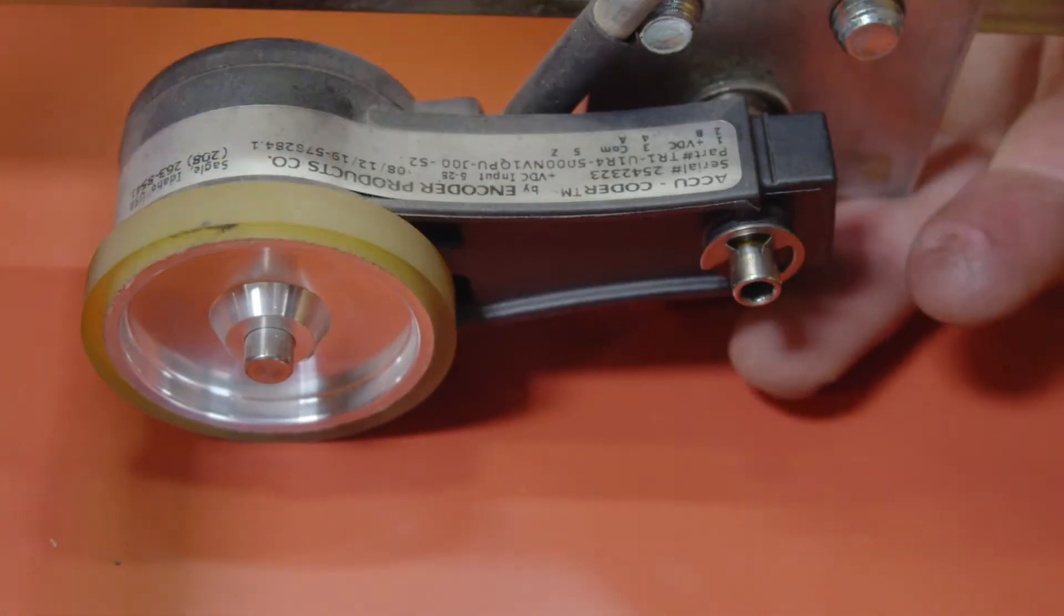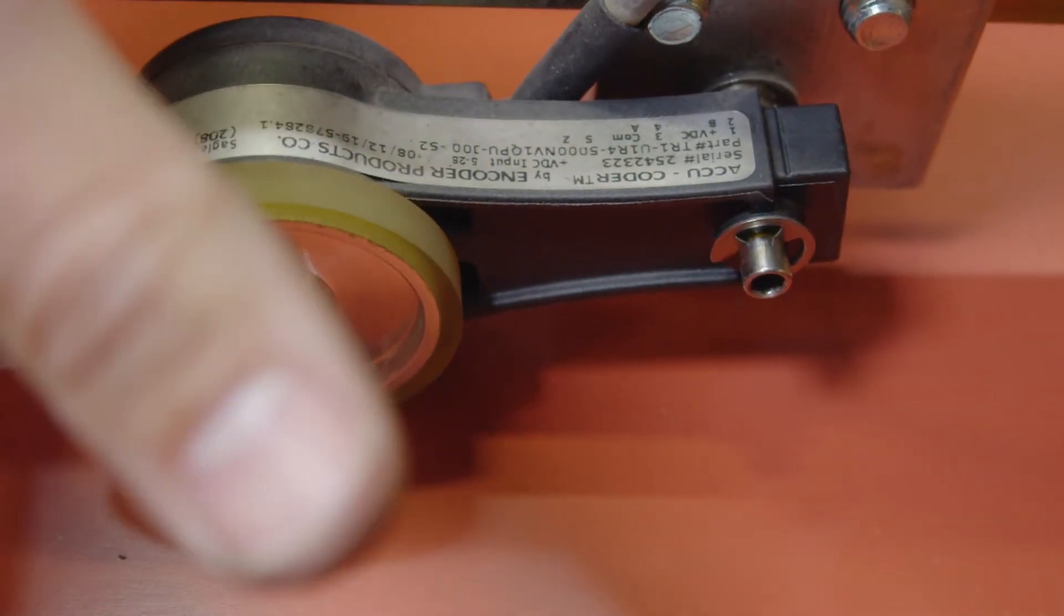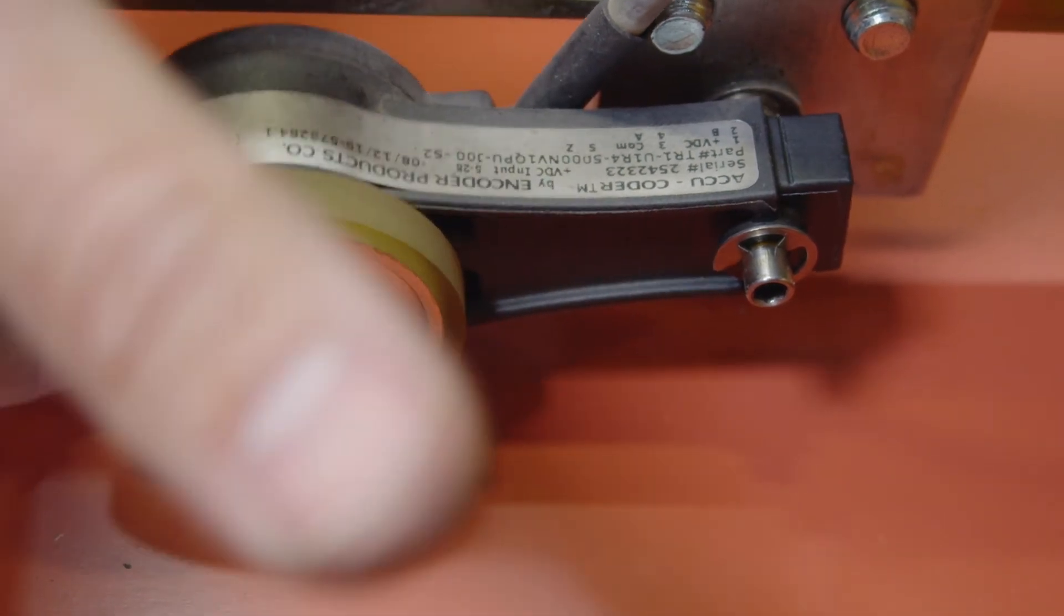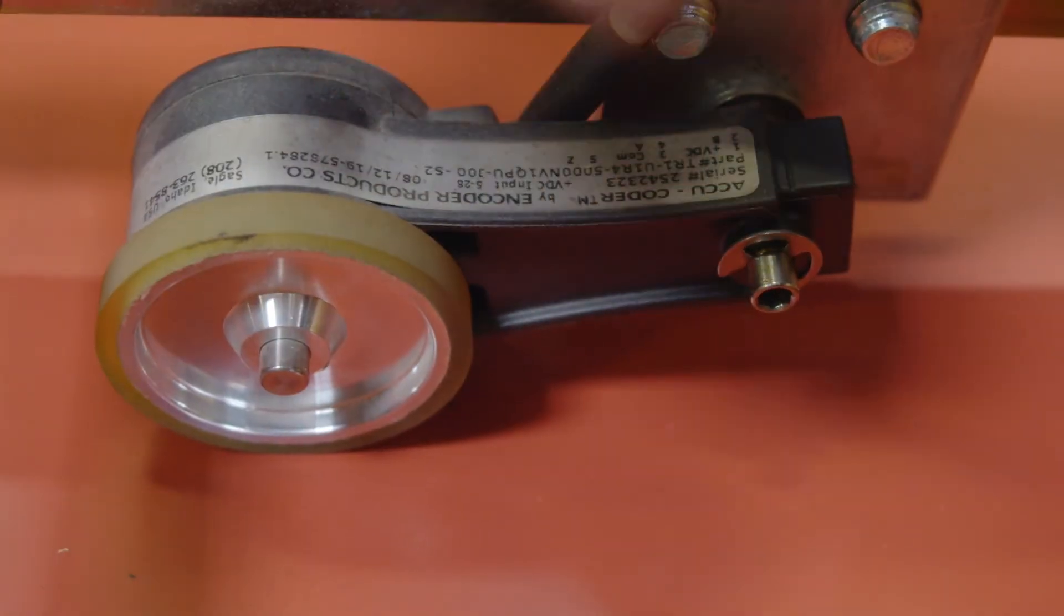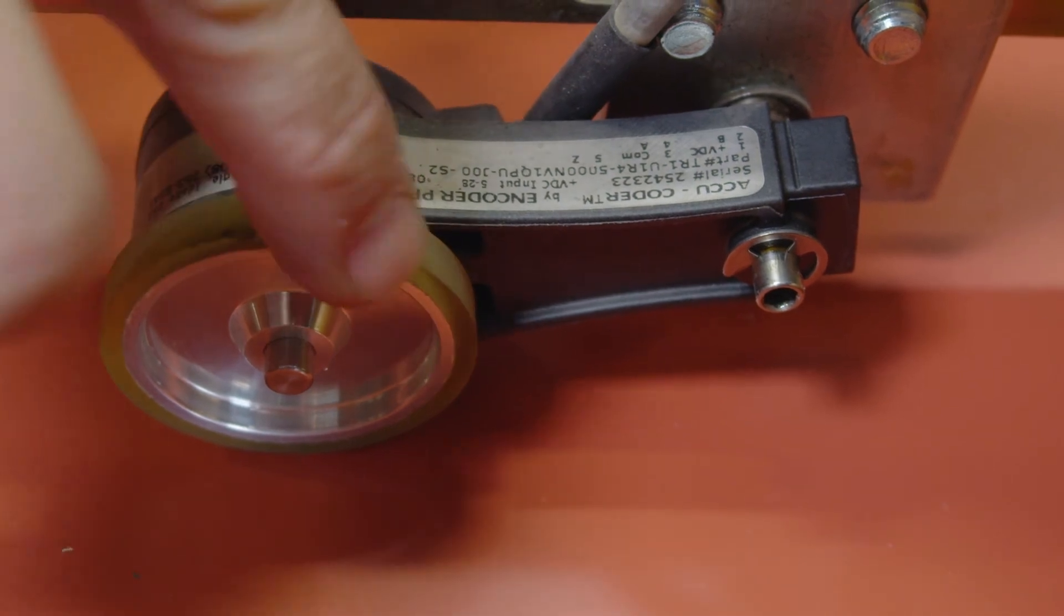When properly tensioned, your encoder should sit firmly on the material so that when the material passes through the machine, you don't get any slip.